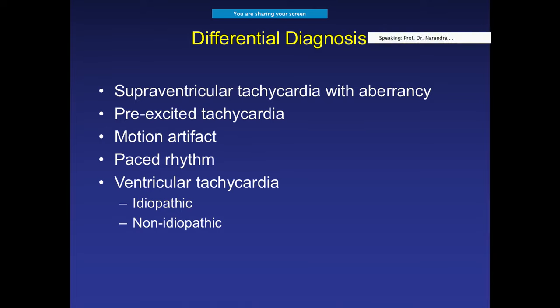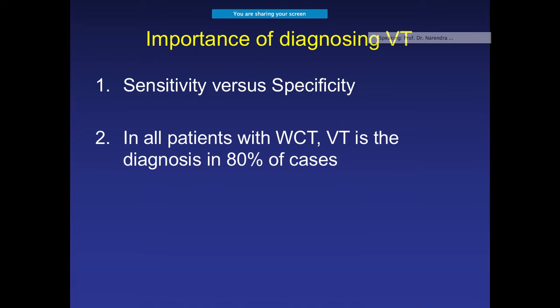Whenever you see a wide complex tachycardia, what is the differential diagnosis? The most common cause is supraventricular tachycardia with aberrancy, where aberrancy means abnormal conduction. It can also be associated with a pre-excited tachycardia involving an accessory pathway, motion artifact, a paced rhythm, or of course ventricular tachycardia. If you come across a wide QRS tachycardia, you should always think VT first.